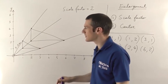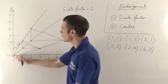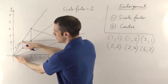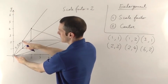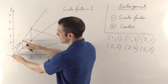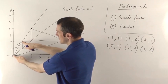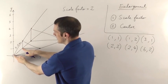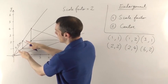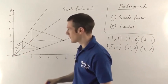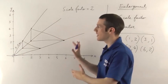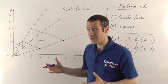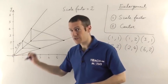I'll give you another example in a second. So to recap: you draw your lines through each corner of the shape, measure the distance to each corner, and then times it by the scale factor. If the scale factor is 2, whatever that distance is, you're doubling it. Now I'm going to draw another example, and this time we're going to pick a different centre of enlargement — not the origin.